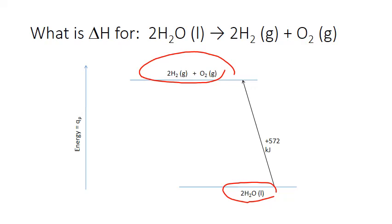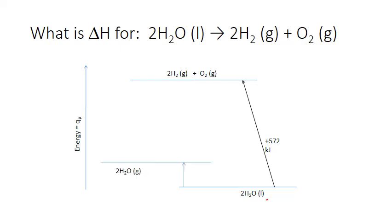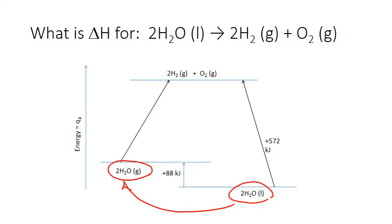In the direct step, it would require 572 kilojoules of heat. Alternatively, we could do this in two steps. We could first change phase from liquid water to gaseous water, and this phase change would require 88 kilojoules of heat. Then in our second step, we could break apart the gaseous water molecule into our gaseous elements, and that second step would require 484 kilojoules of heat.